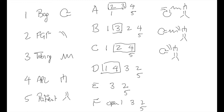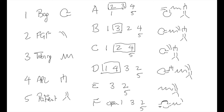D is the bag, the APL valve, the tubing, the fresh gas flow, followed by the patient. E is tubing, fresh gas flow, followed by the patient. And F is an open bag, followed by the tubing, fresh gas flow, and then the patient. And that is how you draw the Mapleson circuits in under 2 minutes.